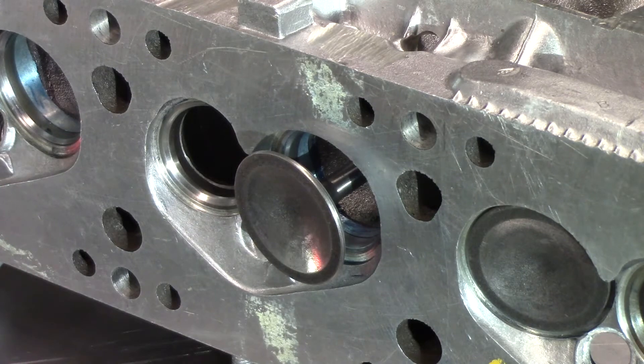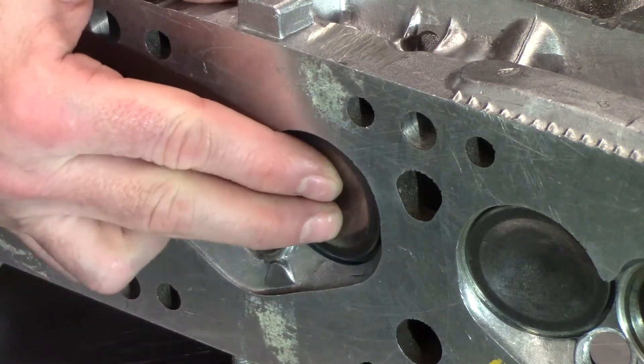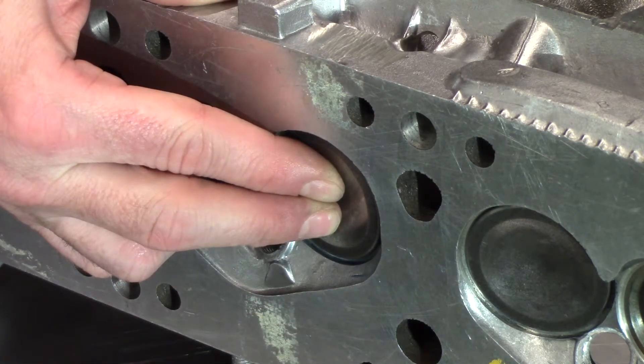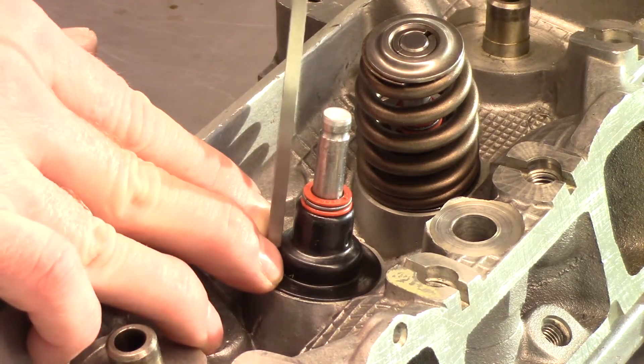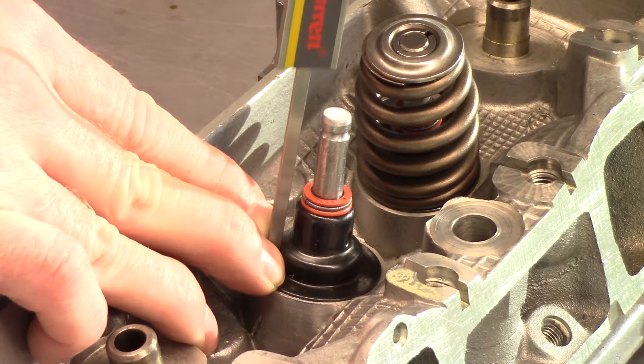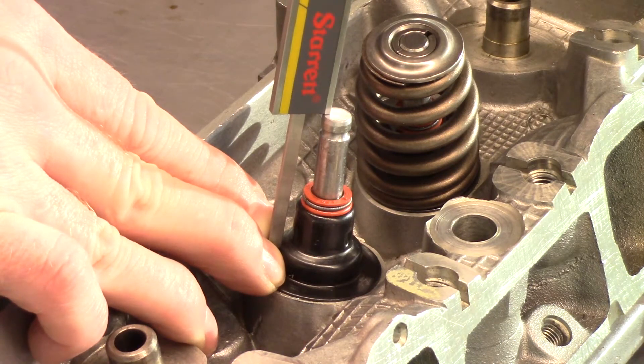With the valve spring and retainer removed, use your hand to hold the valve closed against the seat. Use the depth measuring blade of a vernier caliper to measure from the very tip of the valve to the valve spring seat.